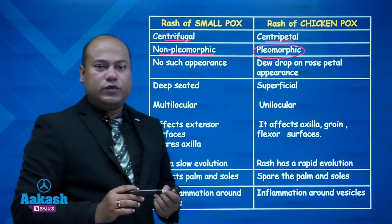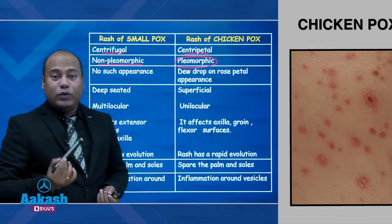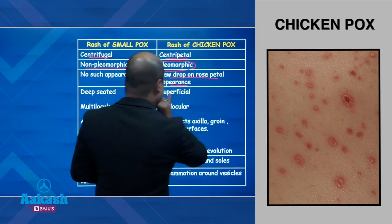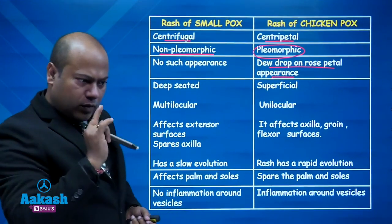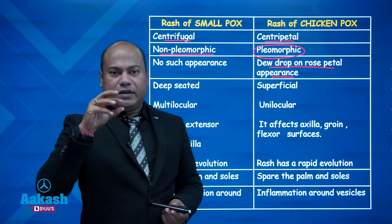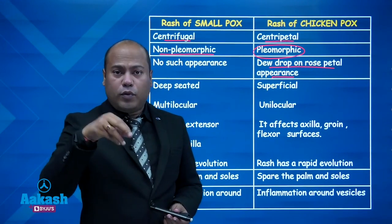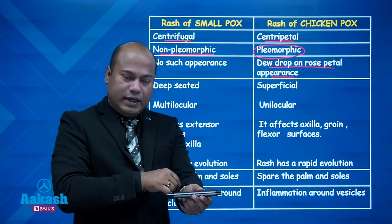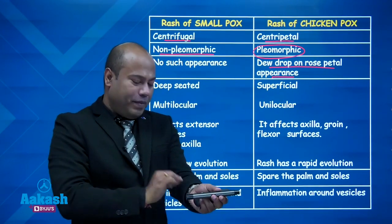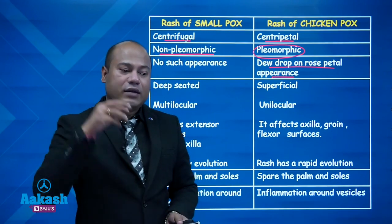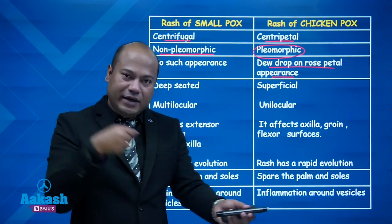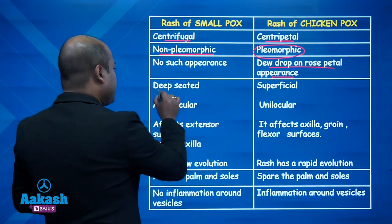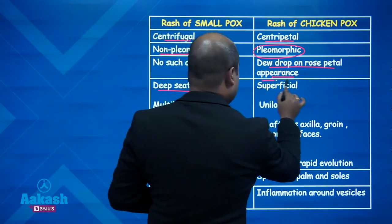Chickenpox rash has a typical 'dew drop on rose petal' appearance, which is an important MCQ point. Smallpox has no such appearance. Another very important difference: chickenpox rash is superficial, whereas smallpox rash is deep. The deep-seated smallpox rash forms pits on the skin, and sometimes those pits may ulcerate into deeper tissue.